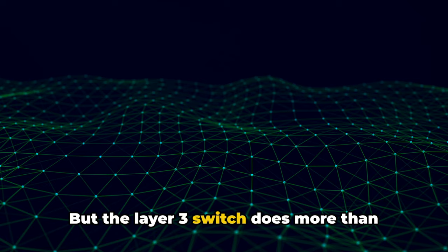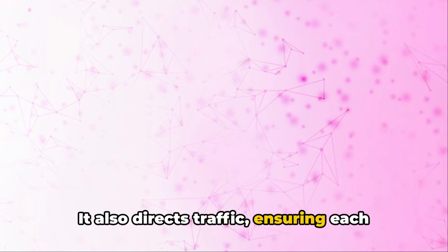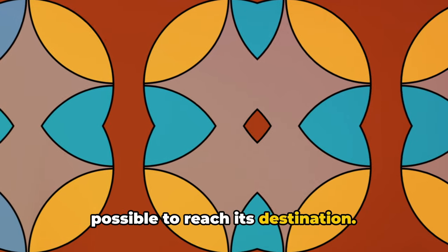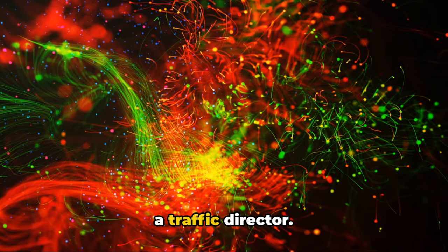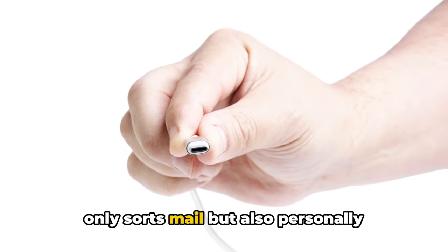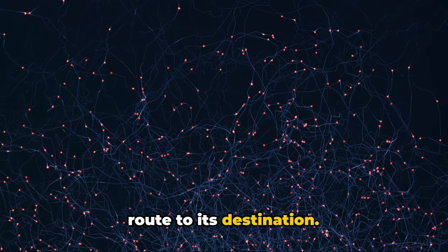But the layer 3 switch does more than just sort. It also directs traffic, ensuring each data packet takes the most efficient route possible to reach its destination. This is where the switch truly shines as a traffic director. It's like having a postmaster who not only sorts mail, but also personally ensures each letter takes the quickest route to its destination.